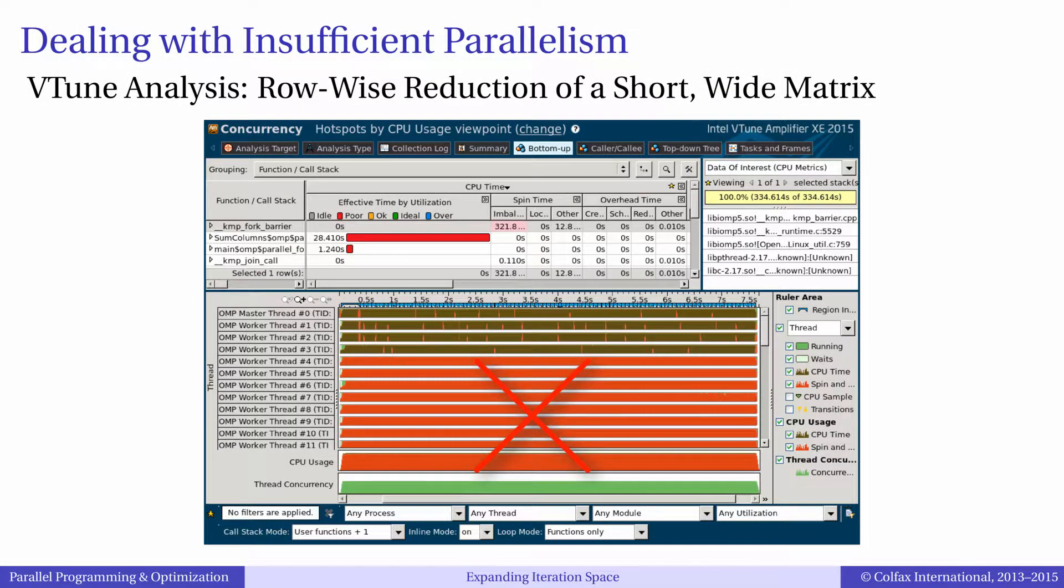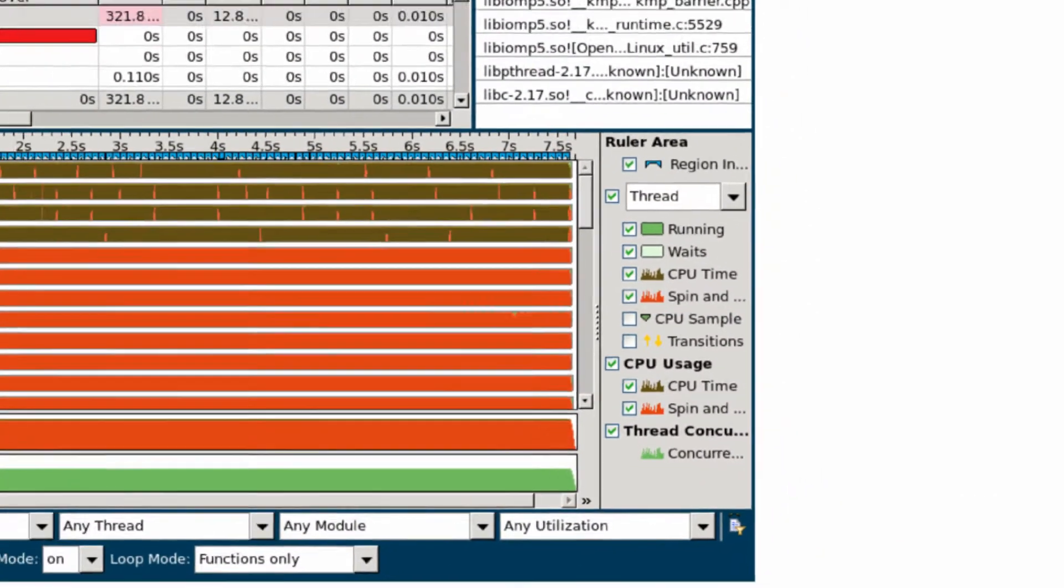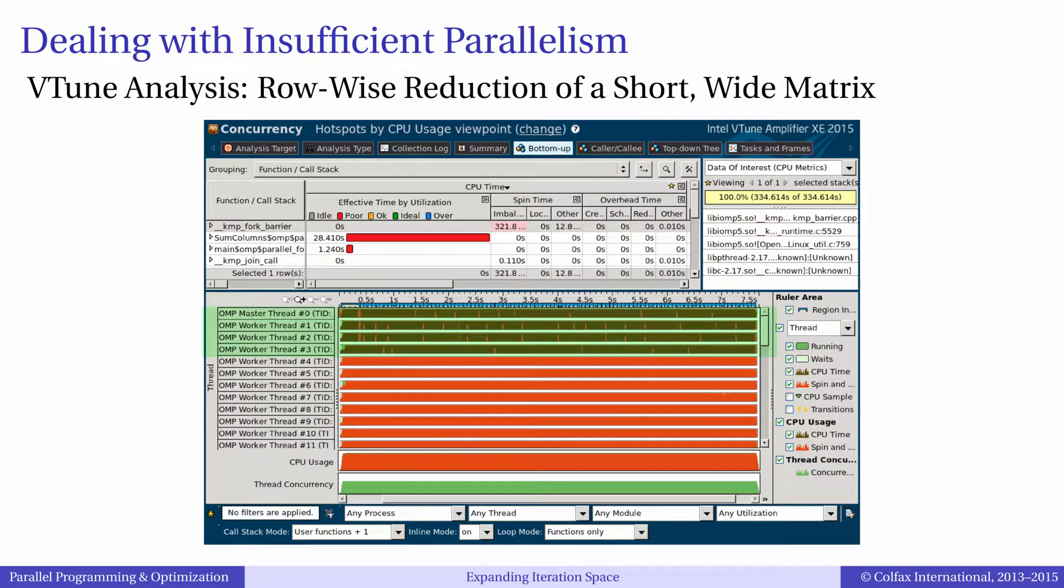We don't want to see orange, which means spinning and idling threads. What we actually see is that 4 threads are performing work while all other threads are sitting there doing nothing. We need to fix this situation.